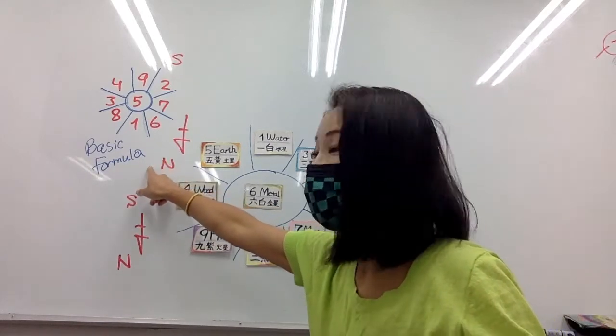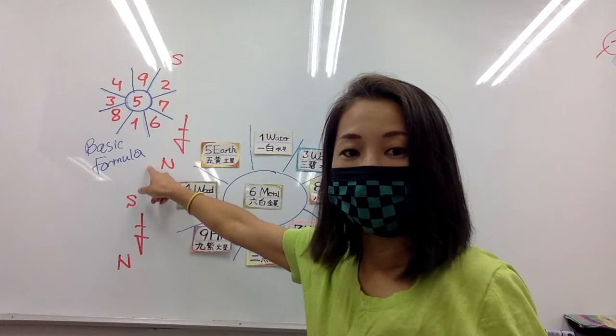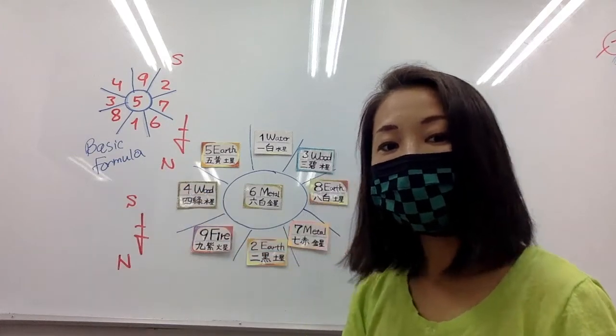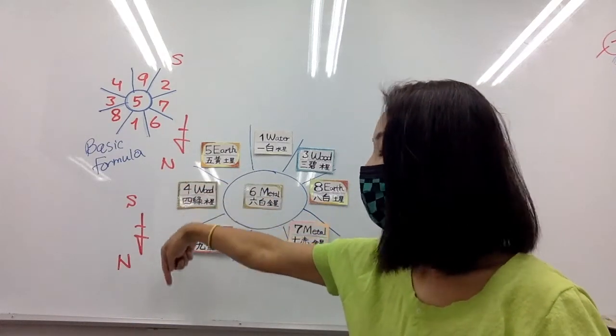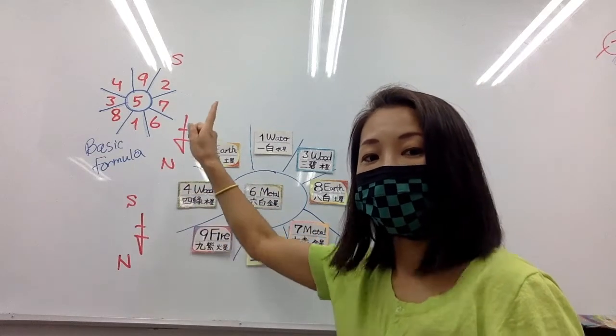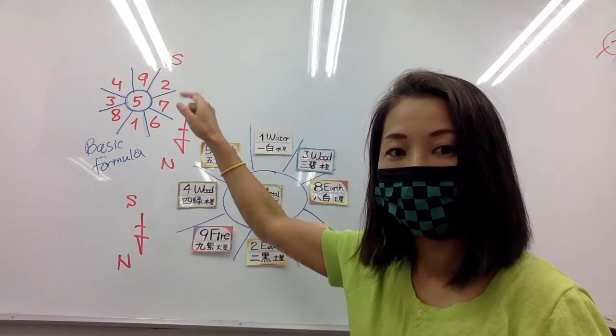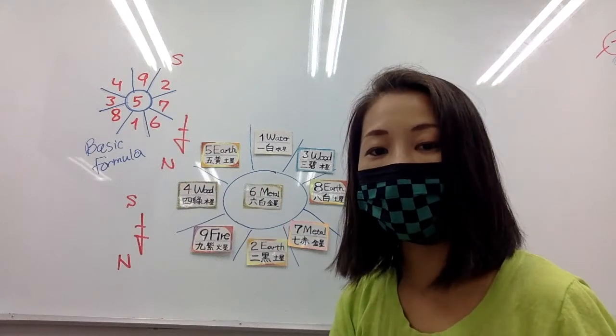Okay, this is basic nine star formula. And here is north, upper is south. Okay, here we go.